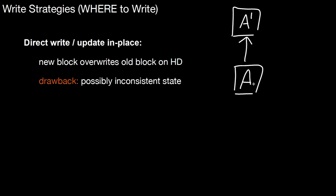If we overwrite this block now, there may be different situations that ruin the consistency of the block. The first is: assume there's a power failure while writing the block. It may happen that while you're writing block A' over A, there's a power failure. You end up in a situation where only the first half of the block reflects the new state A', and the second half still reflects A. So even if you're able to restart the system, when you read this block again, you'll see the first half is A' and the second half is A — a state that shouldn't exist.